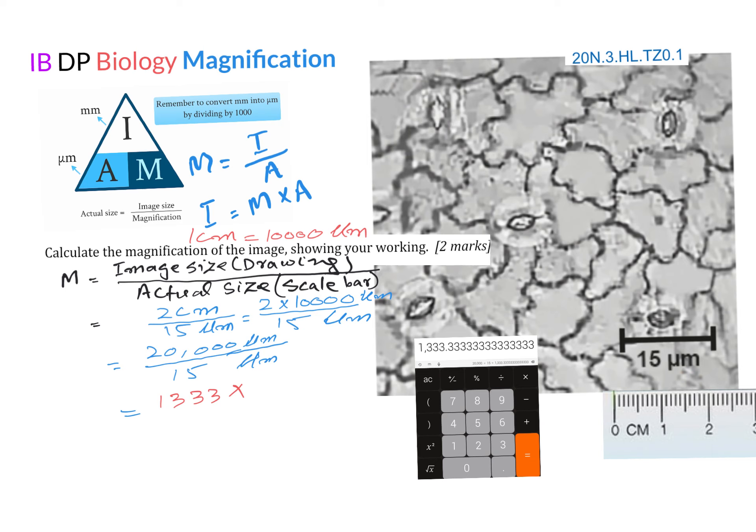To solve a magnification question, we need mainly a ruler, calculator, and definitely a question. The formula to calculate magnification is in the form of this triangle where if you want to calculate actual size, it's image divided by the magnification.